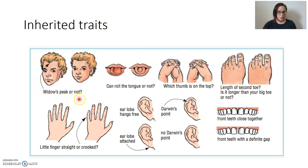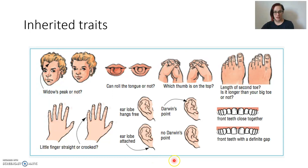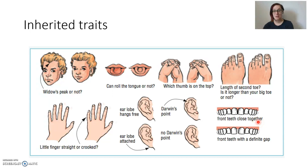Inherited traits in humans include: a widow's peak or not — that pointy bit at the front of your hair; whether you can roll your tongue; which thumb sits on top when you fold your hands; the length of your second toe — is it longer than your big toe? Whether your little fingers are straight or crooked; whether your earlobe hangs free or is attached; whether you have a Darwin's point at the tip of your ear; and whether your front teeth are close together or have a definite gap.